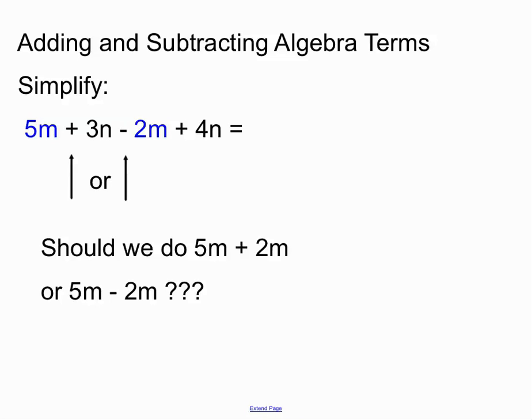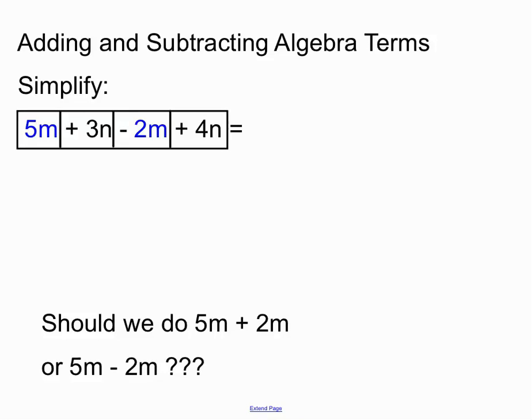Separating them and kind of assigning a plus or minus sign to each of those terms so we know what to do. So you can see that if we put boxes around it, this plus in this second box belongs to the 3n, and we'd say this minus belongs to the 2m, and this plus belongs to the 4n.